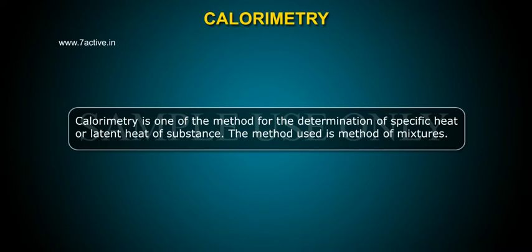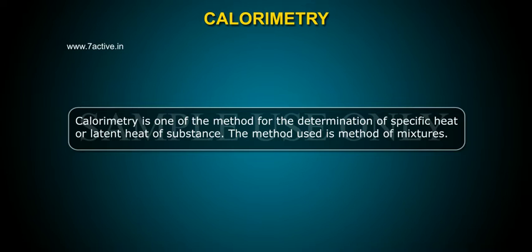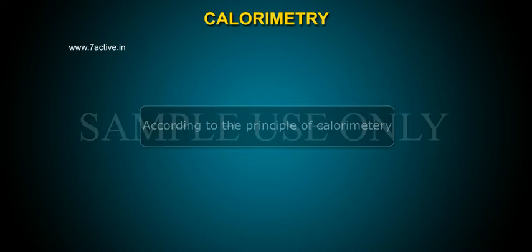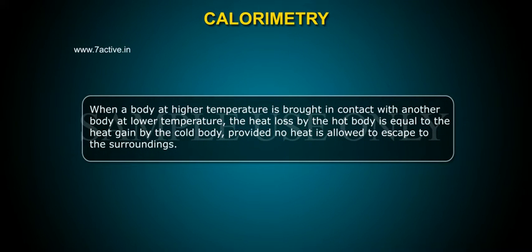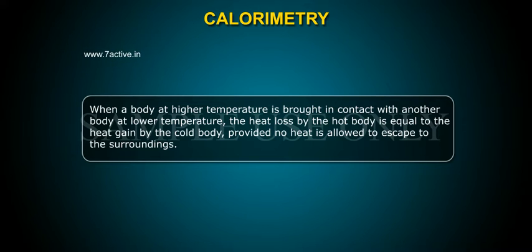Calorimetry is one of the methods for the determination of specific heat or latent heat of a substance. The method used is the method of mixtures. According to the principle of calorimetry, when a body at higher temperature is brought in contact with another body at lower temperature, the heat lost by the hot body is equal to the heat gained by the cold body, provided no heat is allowed to escape to the surroundings.